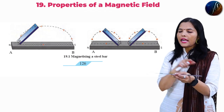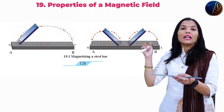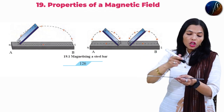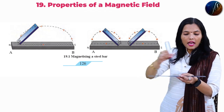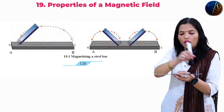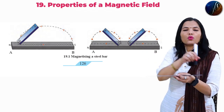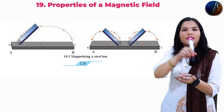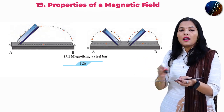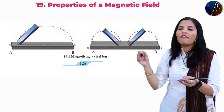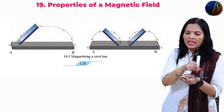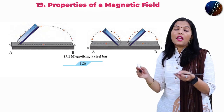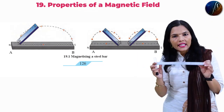Here is the A side of the steel bar on the table, and the north pole is on the other side. We drag the north pole along the steel bar — this is how the dragging is done with the bar magnet.